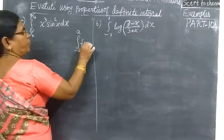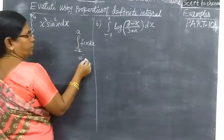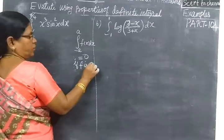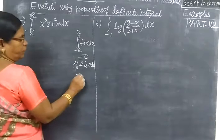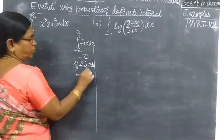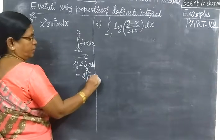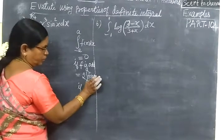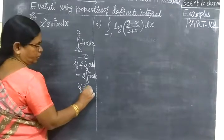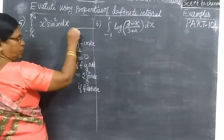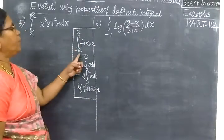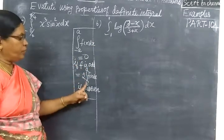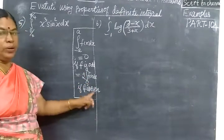The property: integral minus A to A of f(x) dx equals 0 if f is an odd function, or equals twice of integral 0 to A of f(x) dx if f is even. So first of all, we need to determine if the function is even or odd.